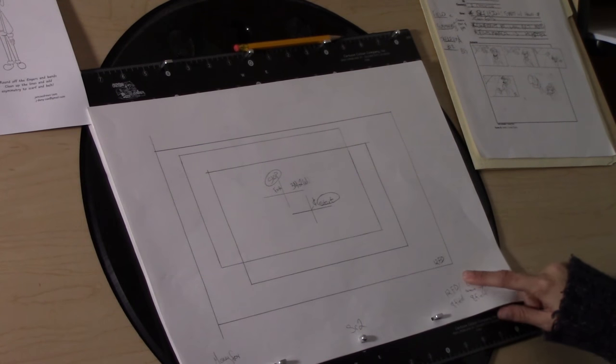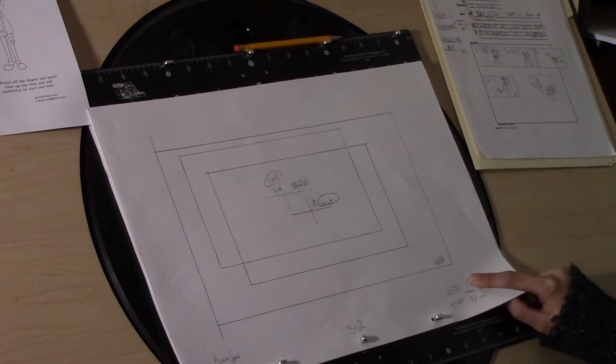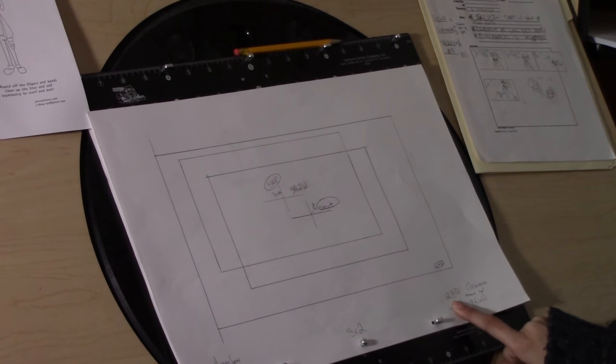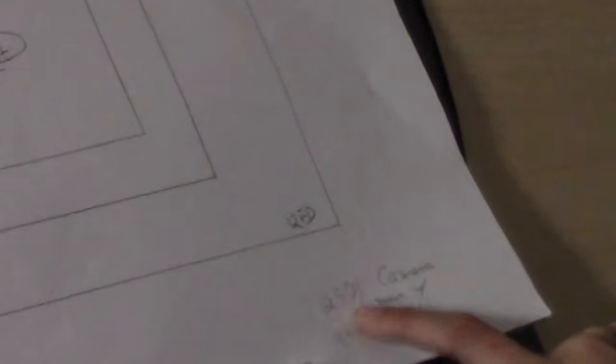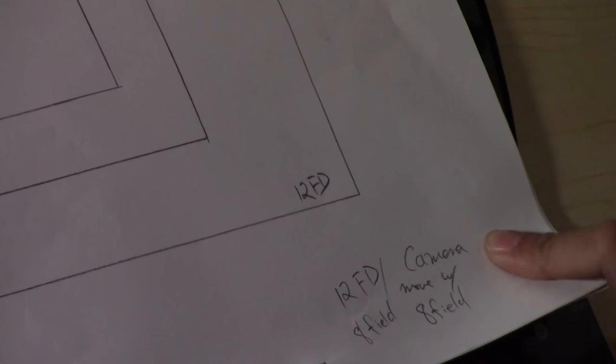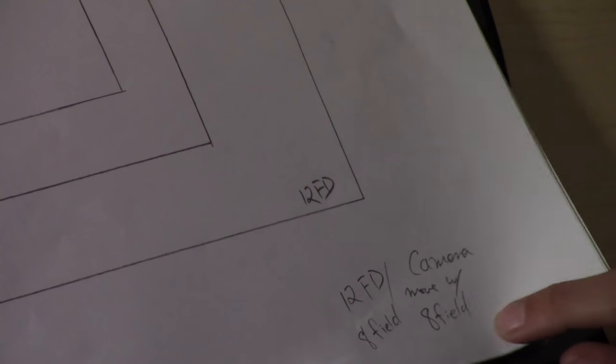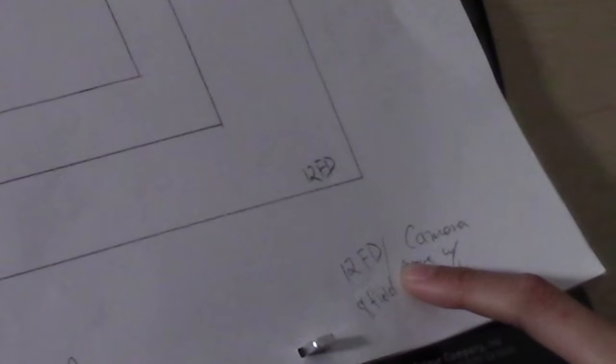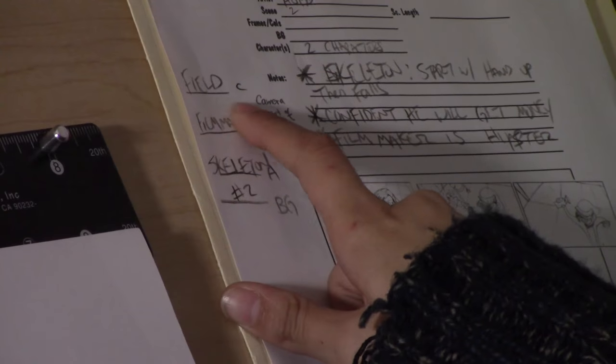And this is the field guide. This shows what size the film is. So this right here tells us that the field guide is a 12 field and it's an 8 field. And this notes what the camera is doing. So it says that the camera moved with 8 field. And on the form over here, it notes that the field guide is level C.